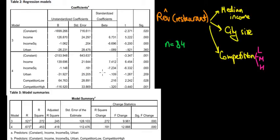Let's have a look at part B of this question. Here I highlighted what matters because otherwise cropping all these papers takes too much space. We're trying to estimate revenues of restaurants based on the median income of the people around those restaurants, the city size where the restaurant is located, and the competition — whether it's low, medium, or high. For that we gathered a sample of 84 restaurants.